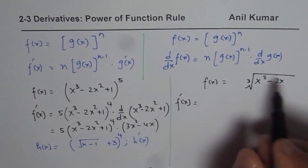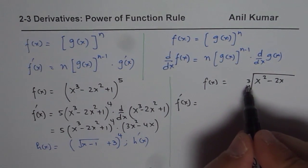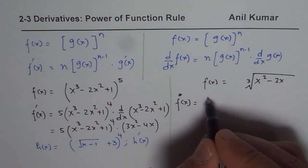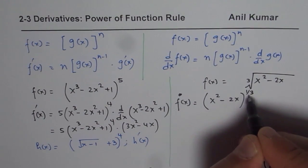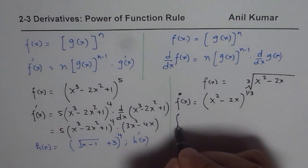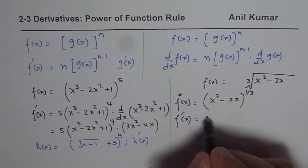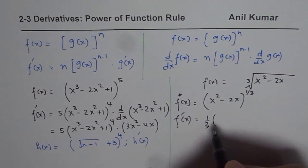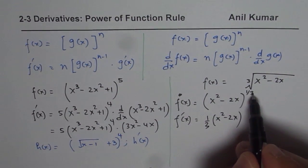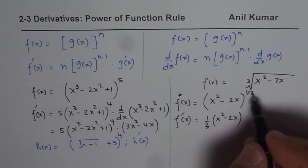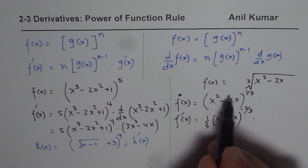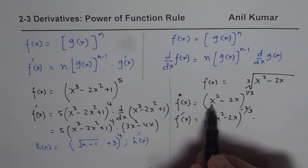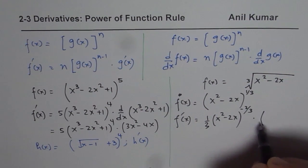Before applying the derivative, let me rewrite this function as x squared minus 2x, to the power of 1 over 3, so that we can apply the power rule easily. So f'(x) will be one-third times x squared minus 2x, to the power of 1 over 3 minus 1, which gives us minus 2 over 3, times the derivative of the inside function. The derivative of the inside function is 2x minus 2.